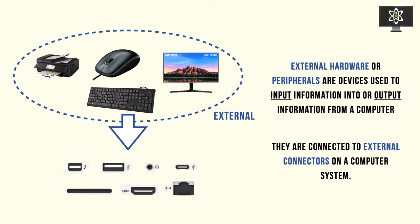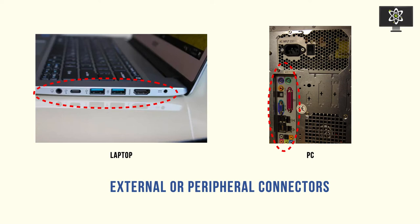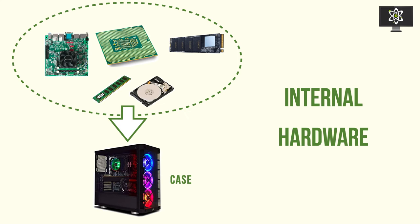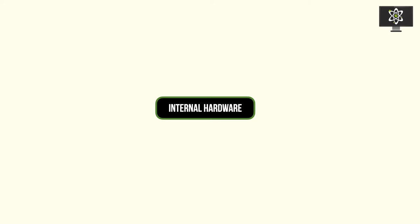The critical thing about external hardware is that you don't need them specifically to operate. These external ports can be seen on the side of your laptop, or on a PC they're either on the front lower part or on the back. Those are external or peripheral connectors - connectors being another word for port. In this video, we'll be focusing on internal hardware.